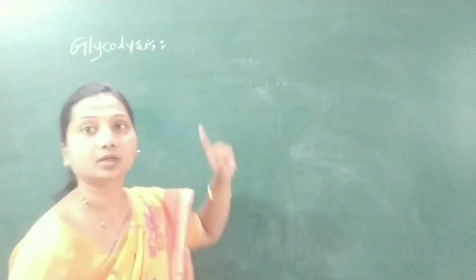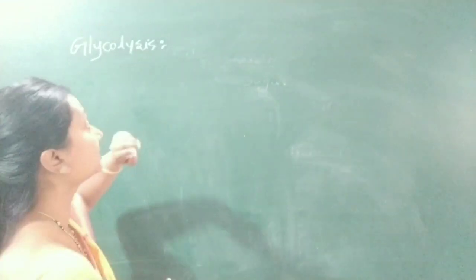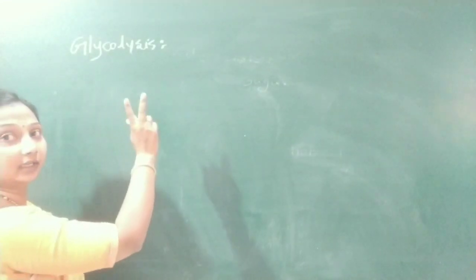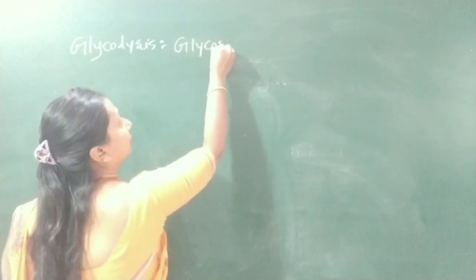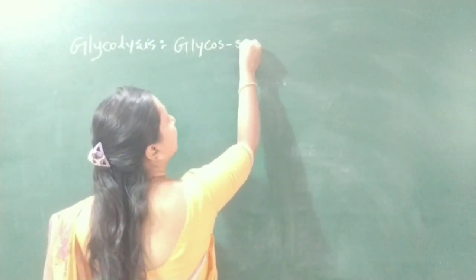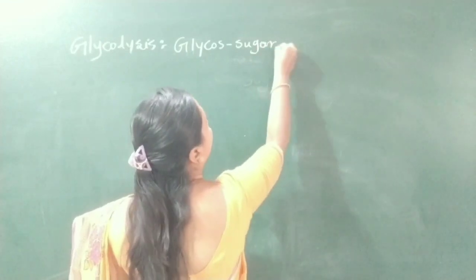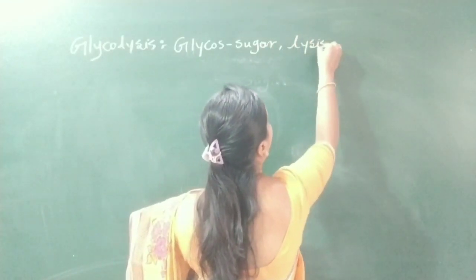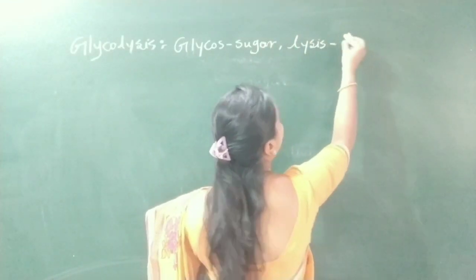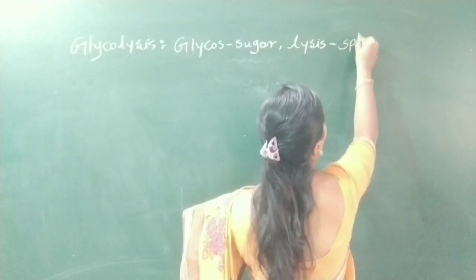We will discuss about glycolysis. Glycolysis is a term originated from two Greek words: 'glycos', meaning sugar, and 'lysis', meaning splitting.